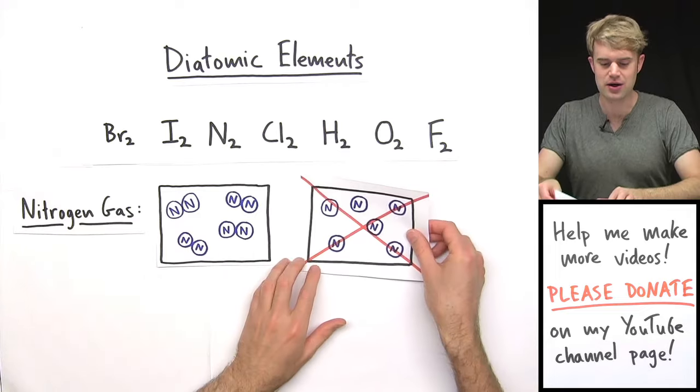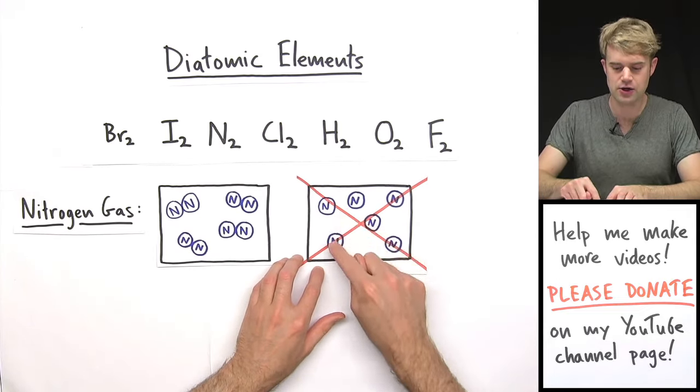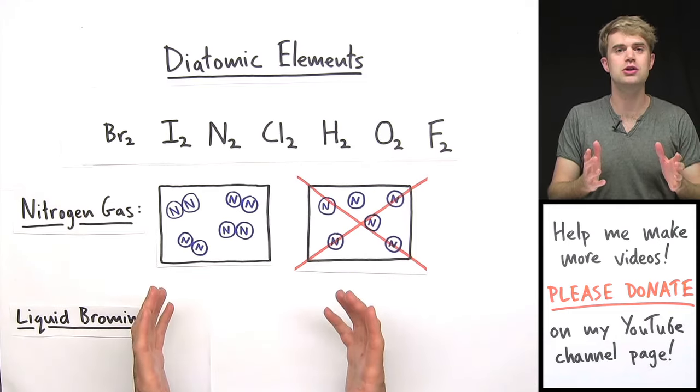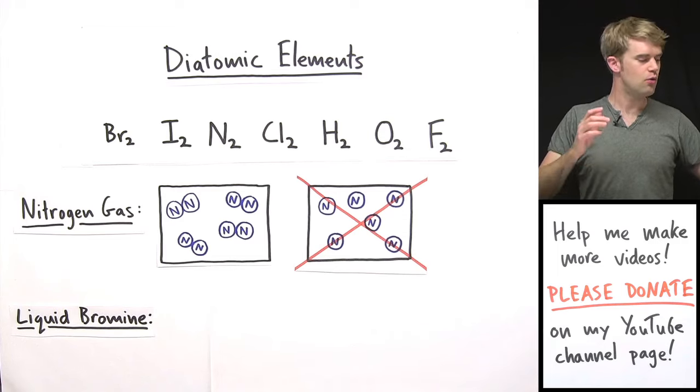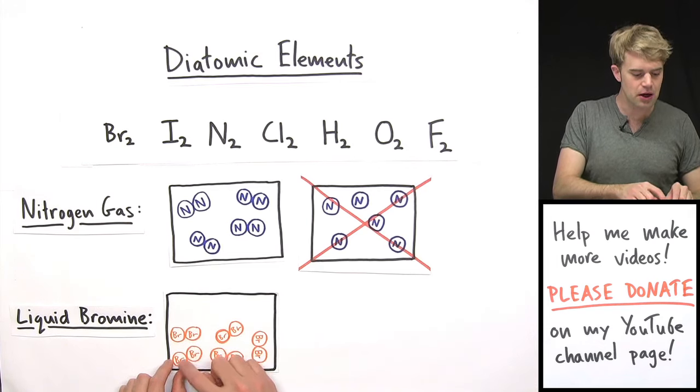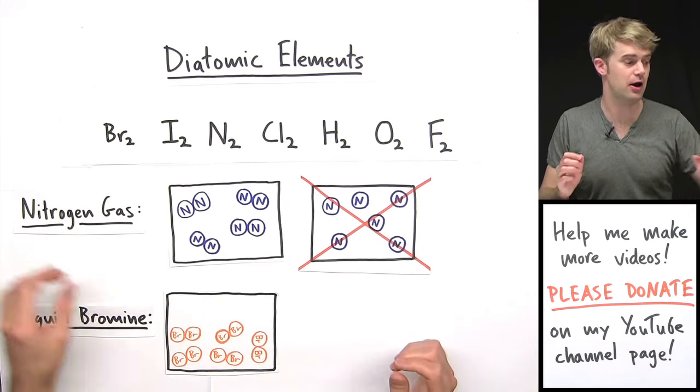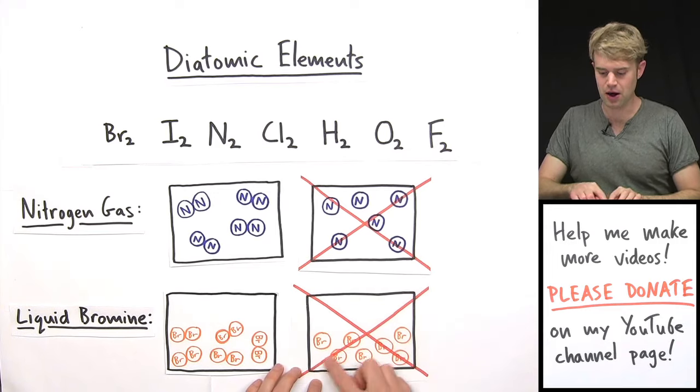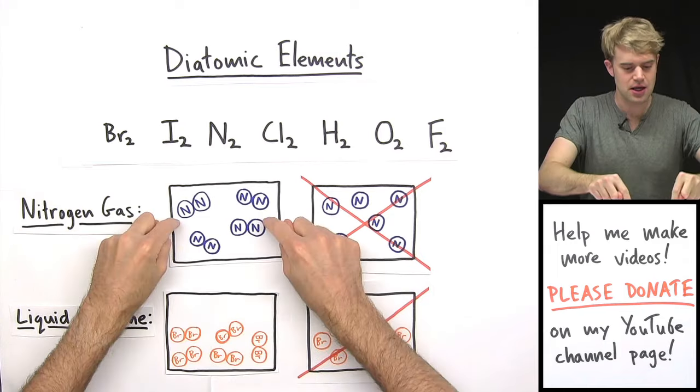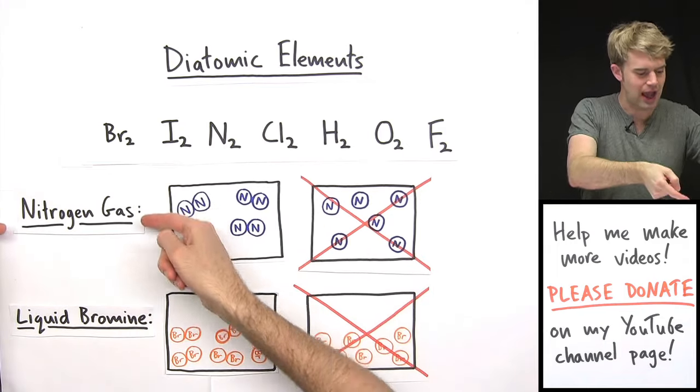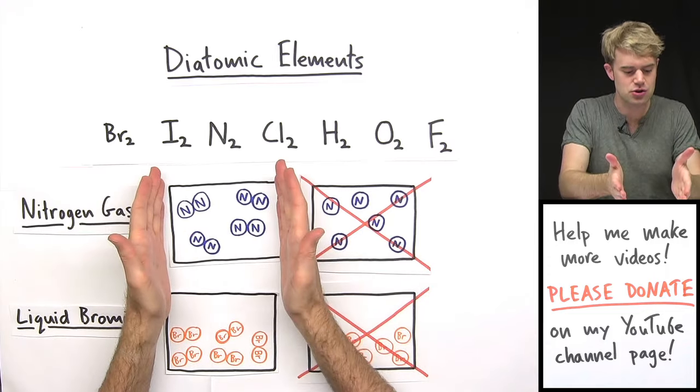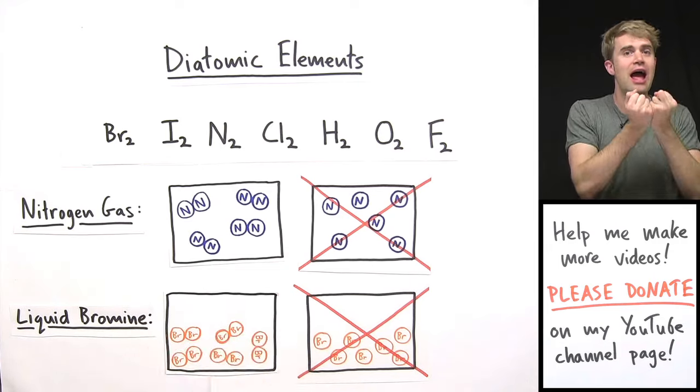If we looked at nitrogen gas, we would not see something like this where the nitrogen atoms would be floating around individually. The same is true for liquid bromine which is made of only bromine. We zoom in on a tiny little drop of liquid bromine and it looks like this. The Br atoms are connected together in pairs. It would not look like this with the Br atoms individually. Nitrogen and bromine have to pair up because these contain nitrogen gas, liquid bromine contain only this element. There's just nitrogen here, there's just bromine here so the atoms have to pair up.